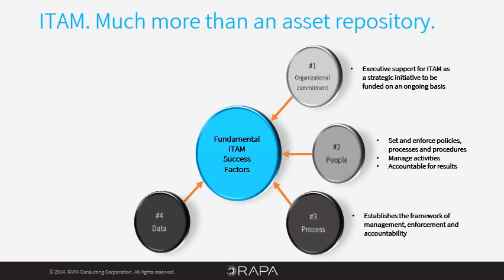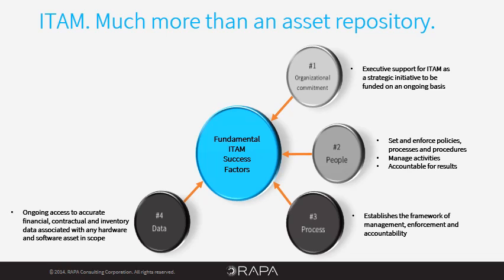Number four: data. ITAM data starts with proof of what you own. Where do you get that data from? What data do you need to track? What if you can't get it? If you're lucky enough to have proof of what you own, how do you know you still have it in your possession? Are you using it as permitted? What is permitted? How are you managing those things you own but can't inventory with technology? The questions are many and there are many more. ITAM is data heavy and without a sound data plan it will not succeed.